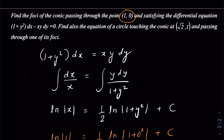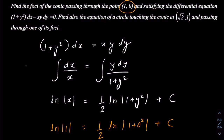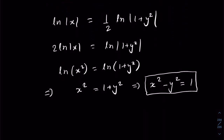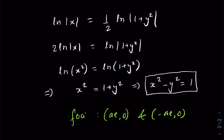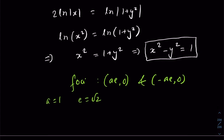Now we need the equation of a circle touching this conic at (√2, 1) and passing through one of its foci. First, let's find the foci. For a standard hyperbola, the foci are at (ae, 0) and (−ae, 0). Here a = 1 and for a rectangular hyperbola, eccentricity e = √2, so the foci are at (√2, 0) and (−√2, 0).